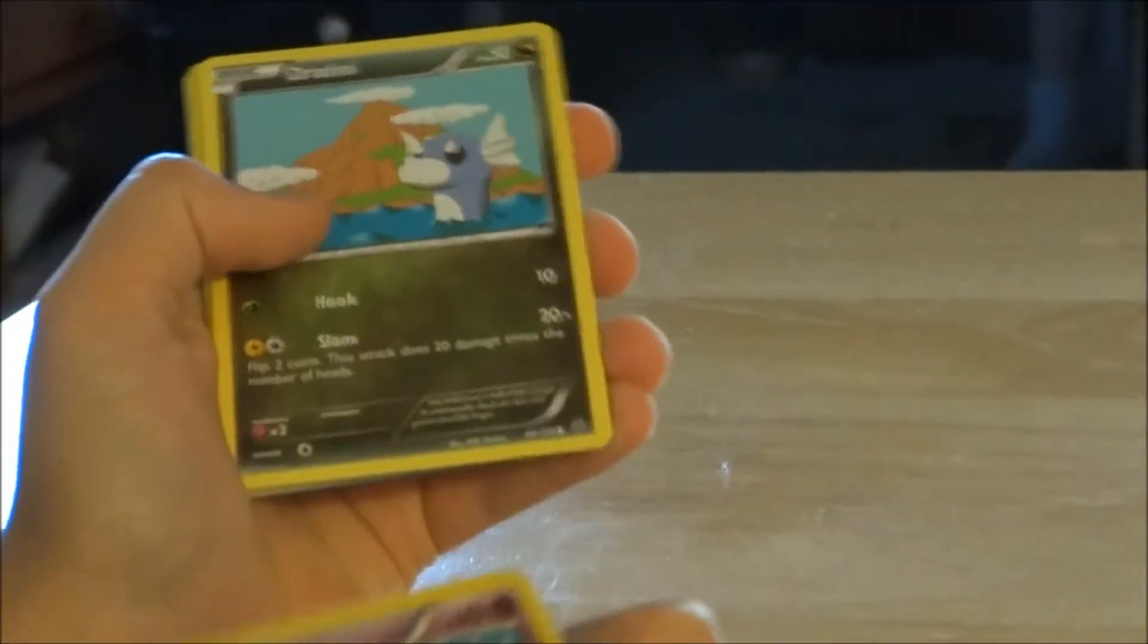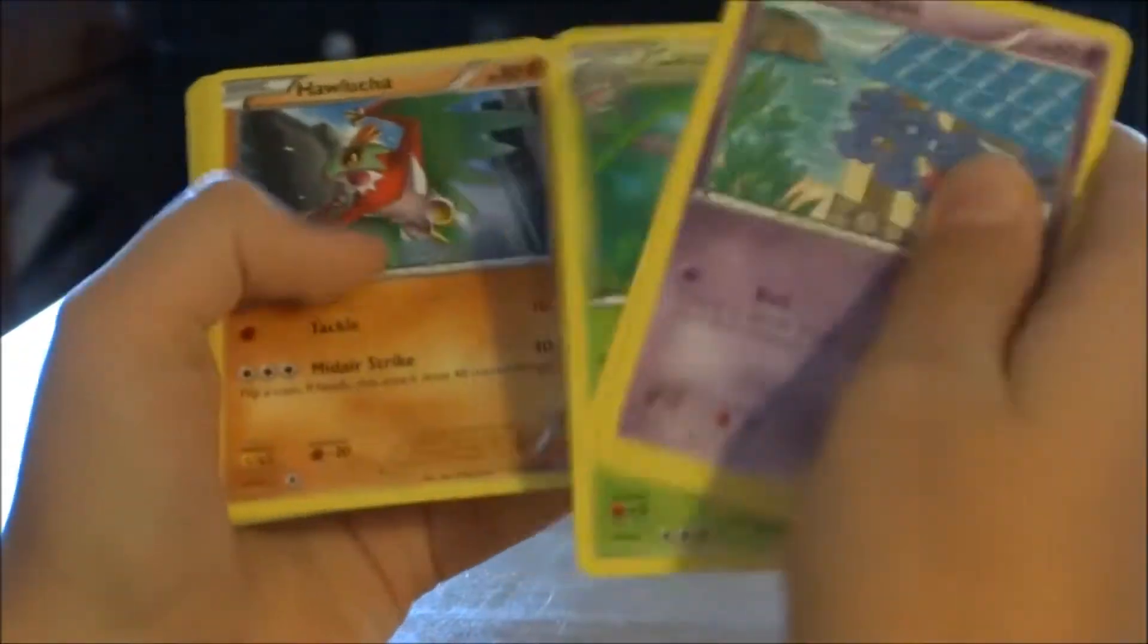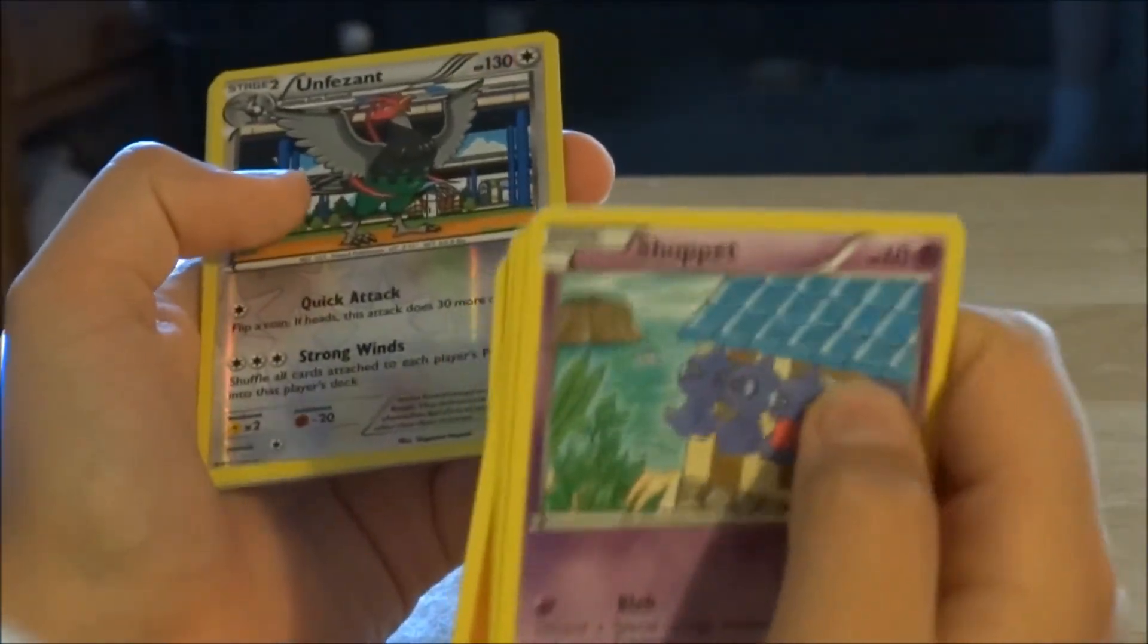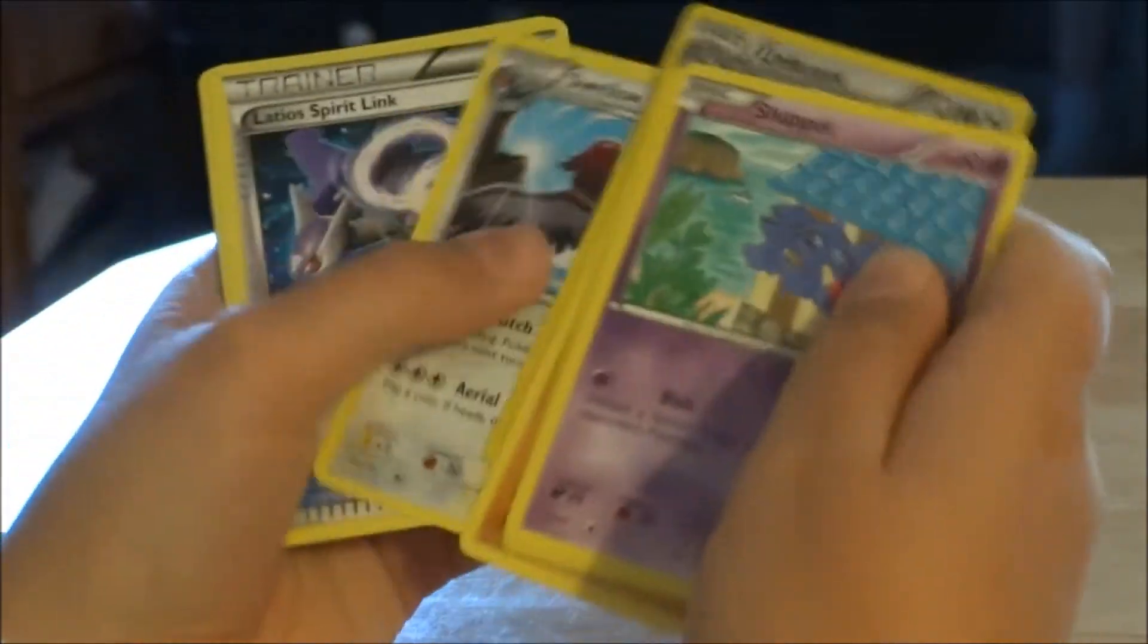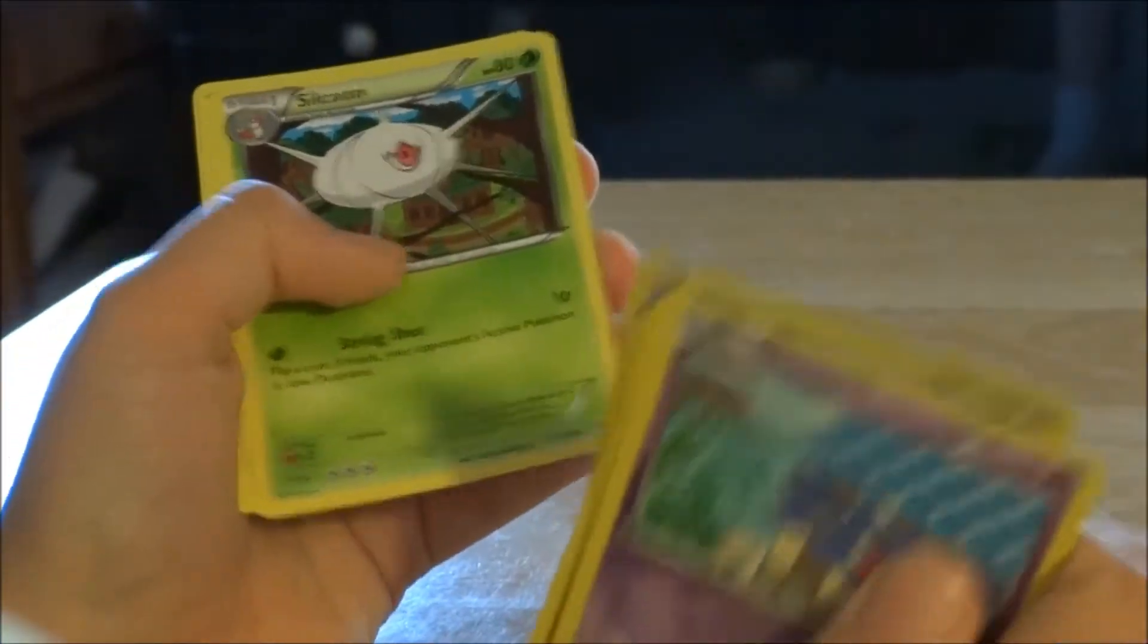Shuppet, Oddish, Cascoon, Hawlucha, Wingull, Reverse Rare Uncommon Unfezant, Swellow, Latios Spirit Link, Silcoon, Wailord.